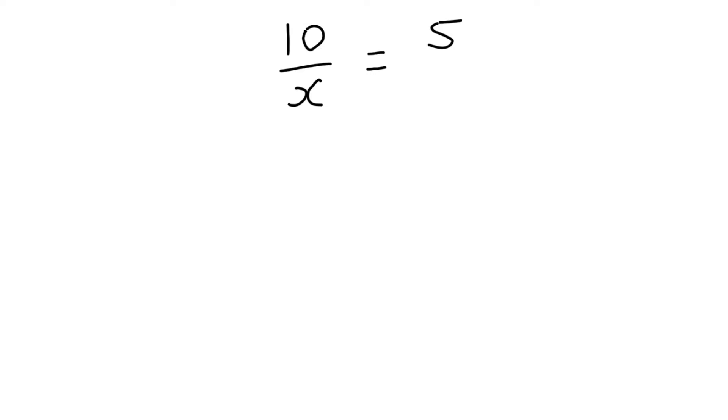Now the way to do this is actually just to think about how do I get rid of that x that's in the denominator. And again, this is like 10 divided by x. So if I were to try and get rid of this x, what I would do is do the opposite - I would multiply the x out.